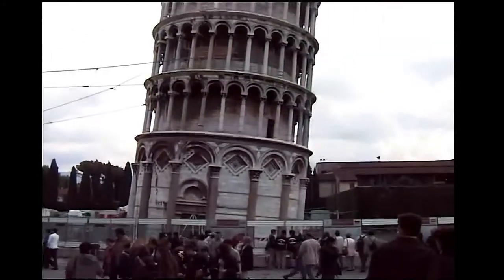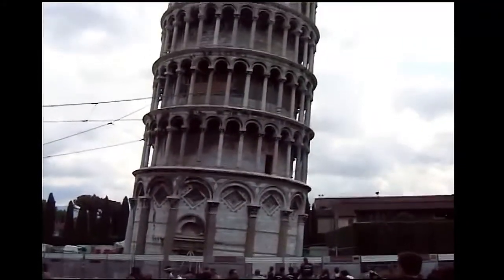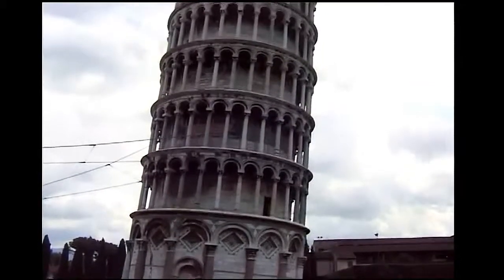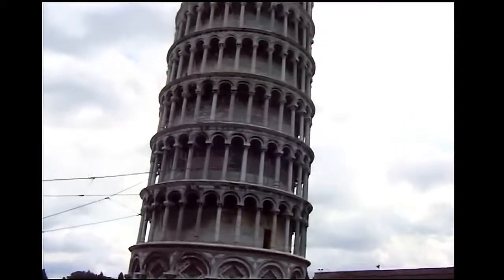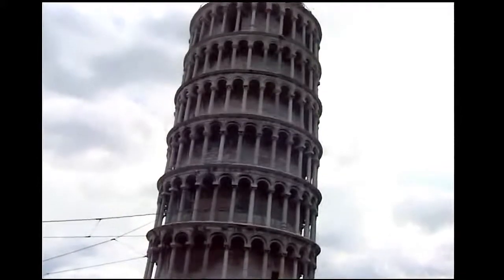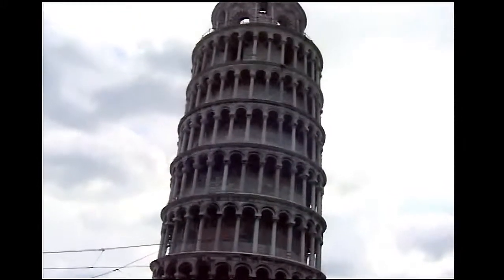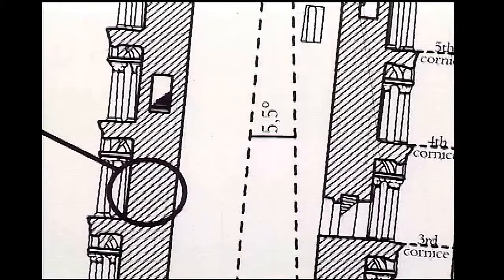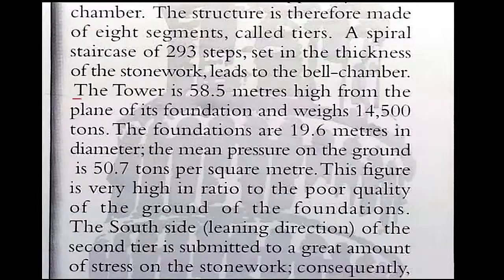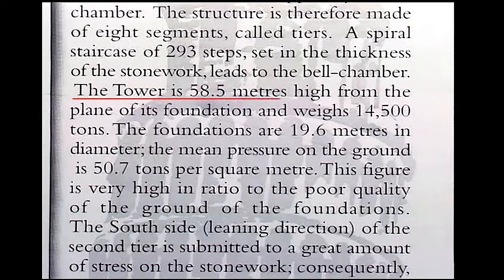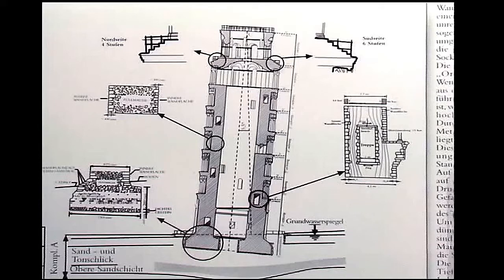This is the famous Leaning Tower of Pisa, built over 800 years ago. The tower has a 5.5 degree tilt. The tower is 58.5 meters high from the plane of its foundation. How many feet does the tower tilt from the base to the top? Let's do the math.